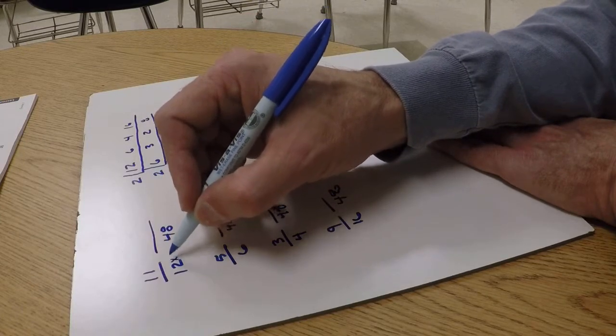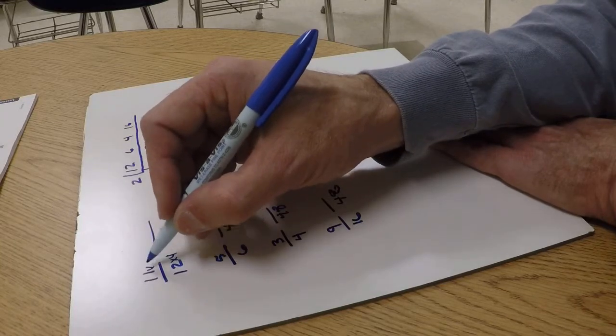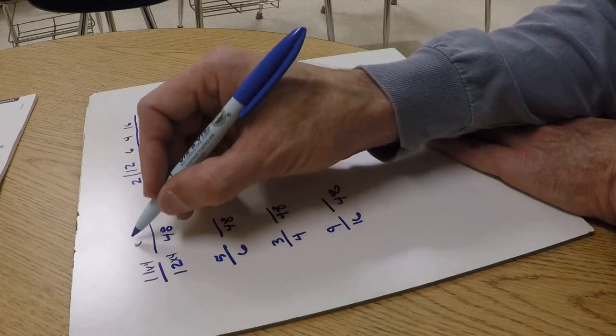So that would be times 4. So I just do that to this top, times 4. 11 times 4 is 44.